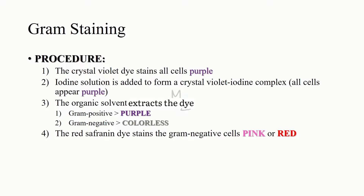The iodine solution is added to form a crystal violet–iodine complex, and at this point all cells continue to appear purple. In the third step, an organic solvent such as acetone or ethanol extracts the purple dye complex from the lipid-rich, thin-walled gram negative bacteria to a greater degree than from the lipid-poor, thick-walled gram positive bacteria. The gram negative organisms appear colorless, while the gram positive bacteria remain purple.